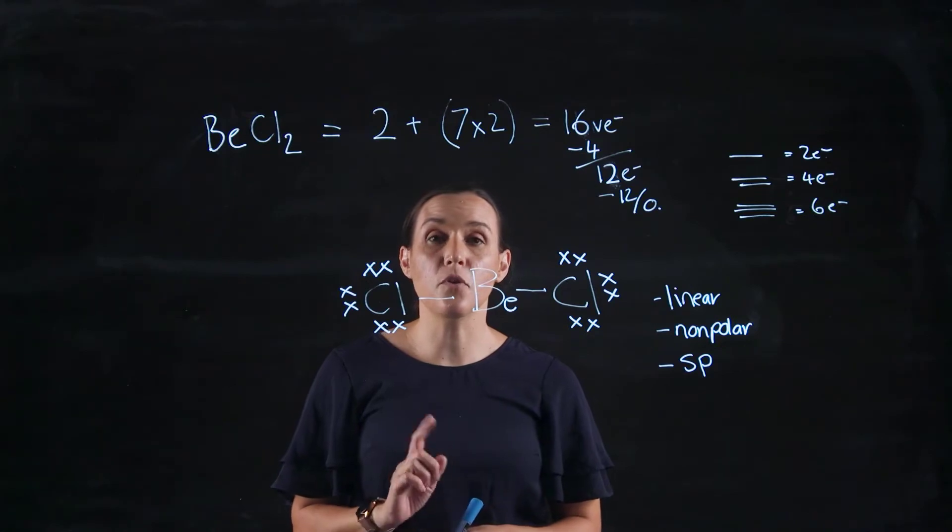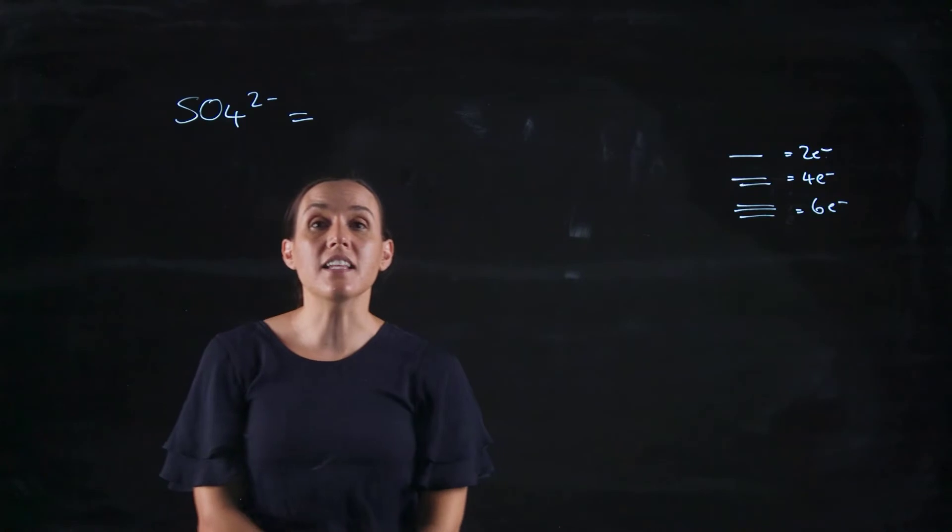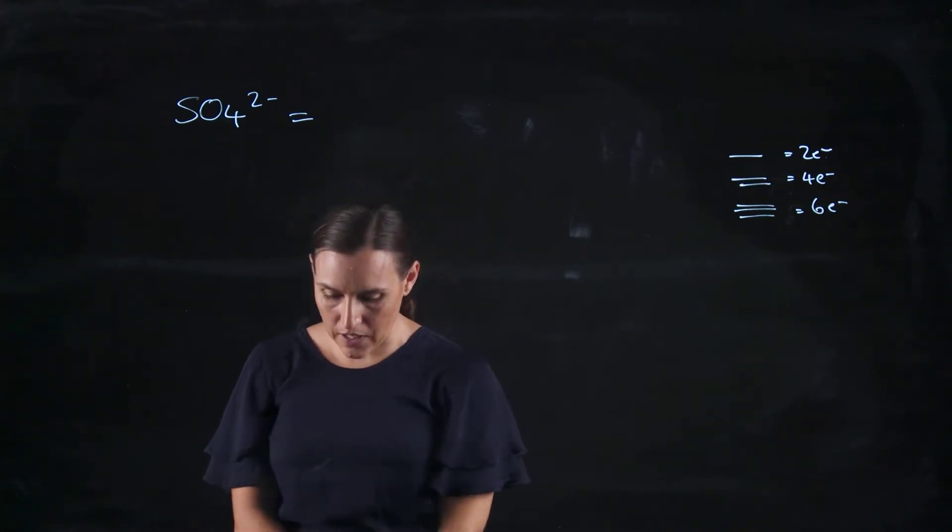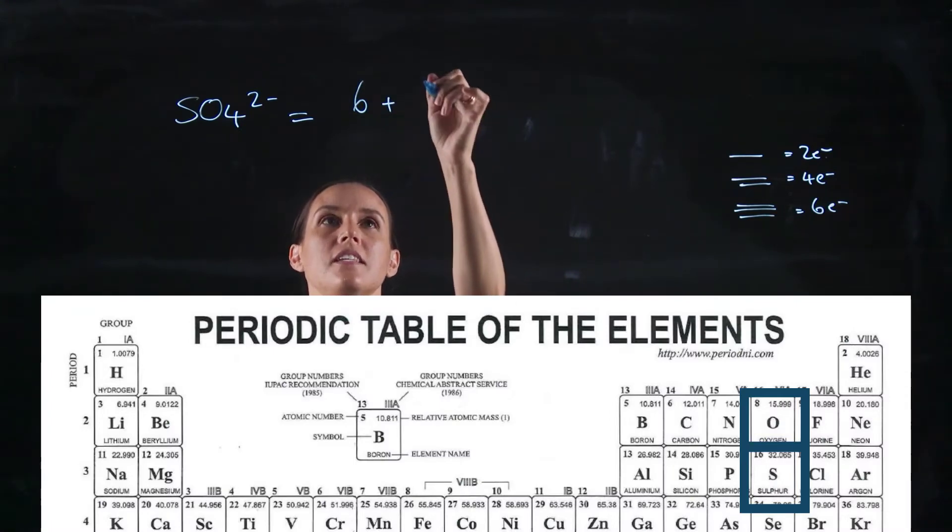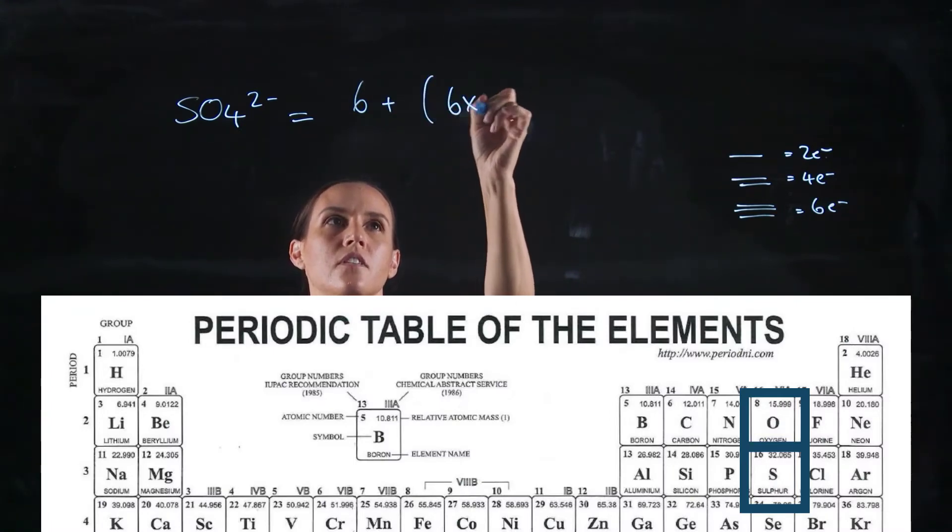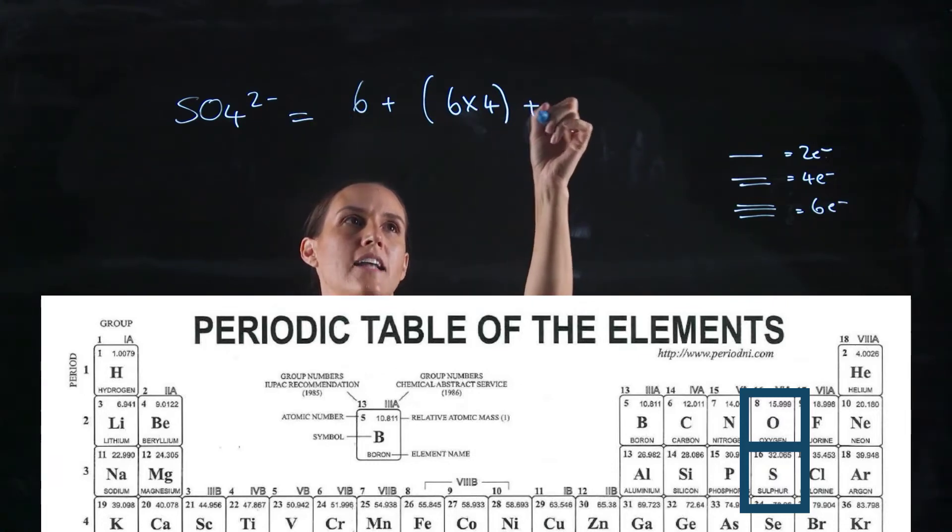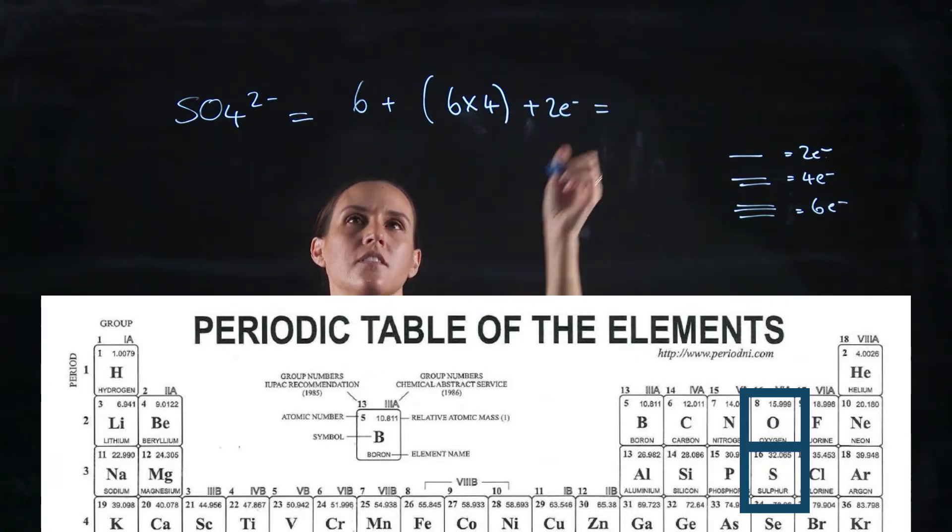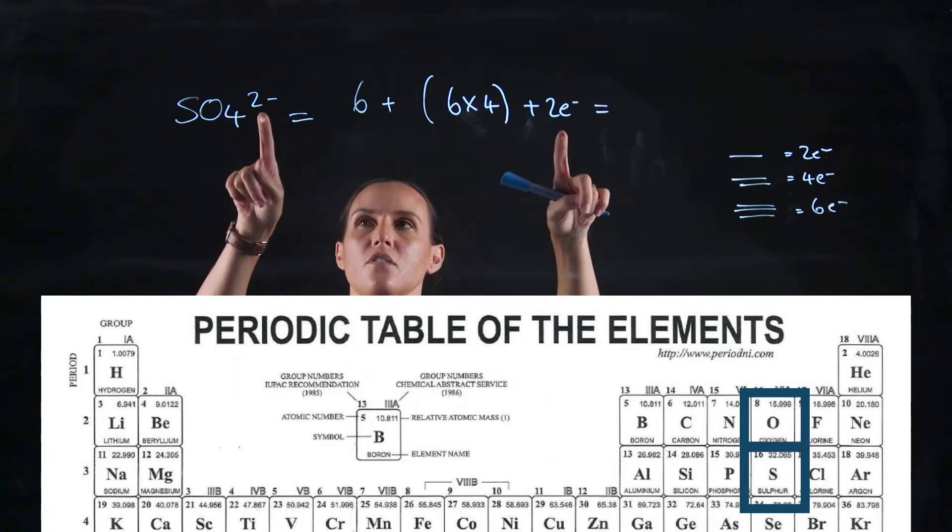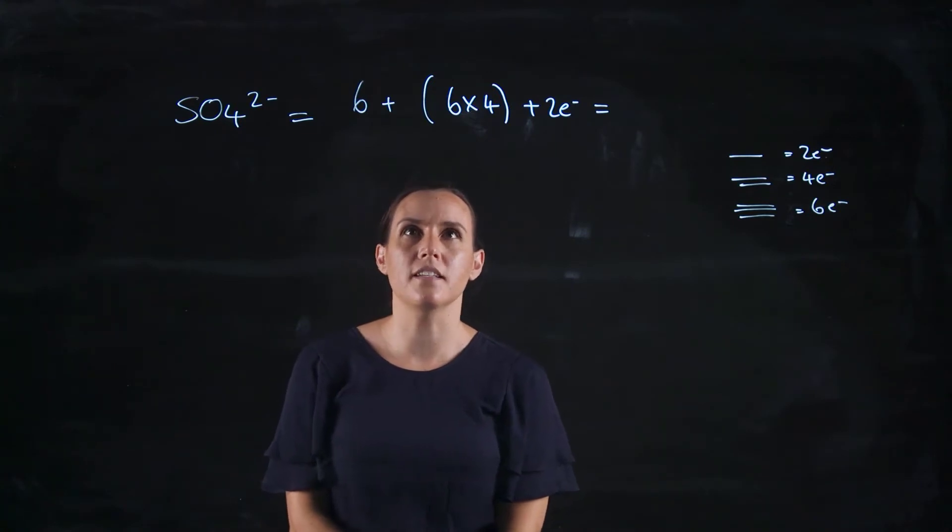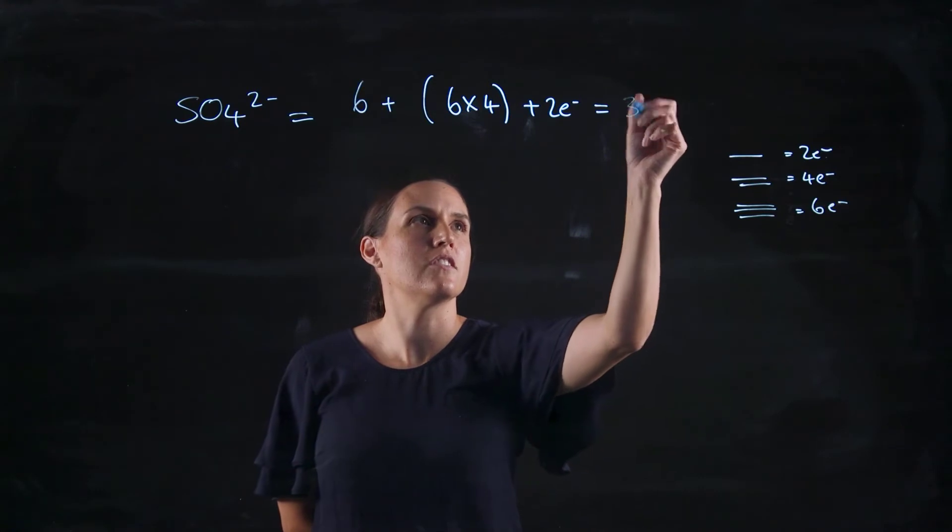So let's look at one more example. Let's look at SO4 2-. So the valence electrons for sulphur would be six, and oxygen would also be six because it's in the same column. So we've got four of those. And then we've got this two minus, so we need to add two electrons. So we've got six for our sulphur, we've got four lots of six for the oxygen, and we've got the two electrons for the two minus. So that's five times six plus two. So that's 32 electrons.